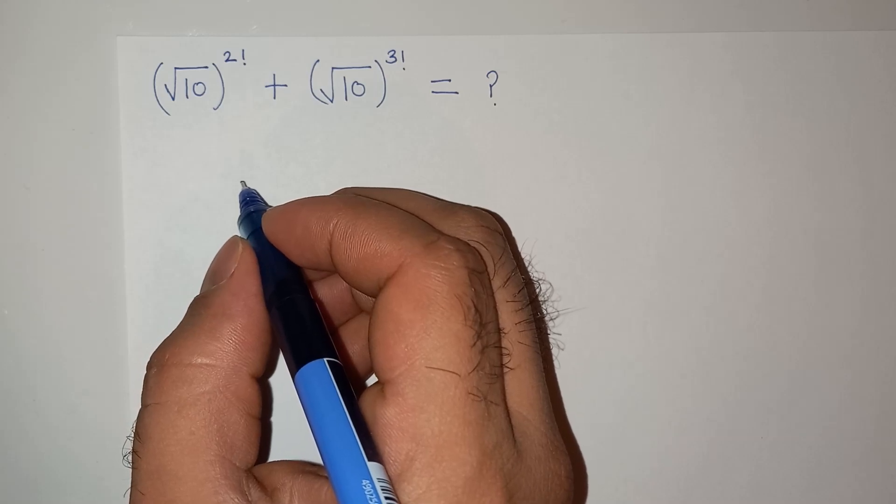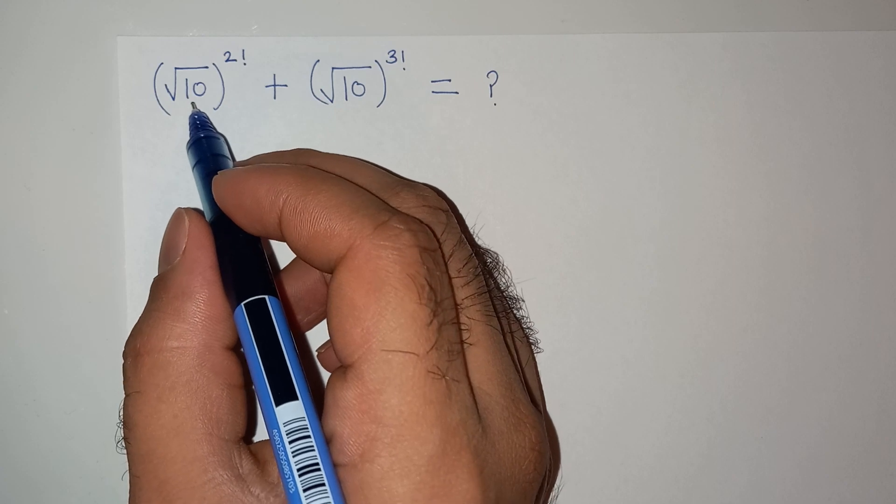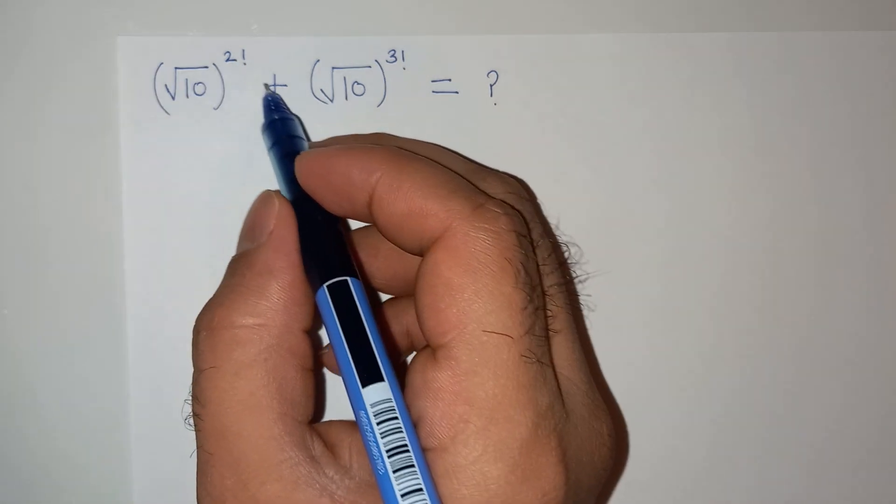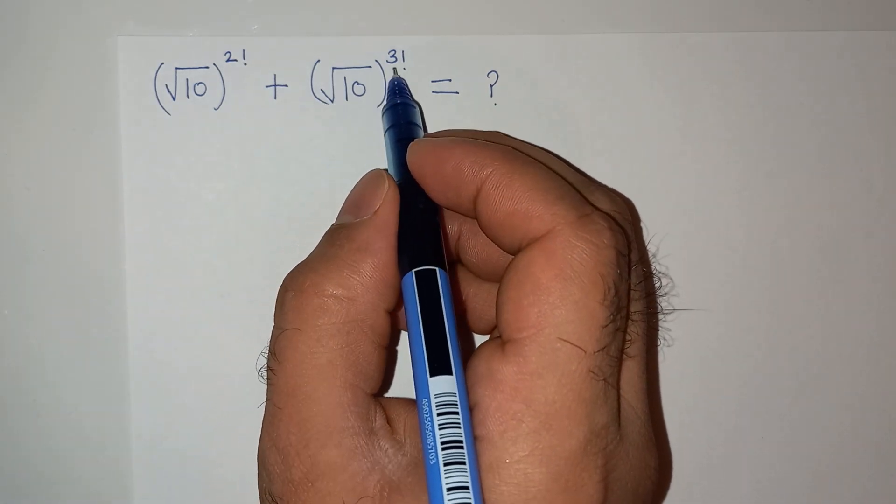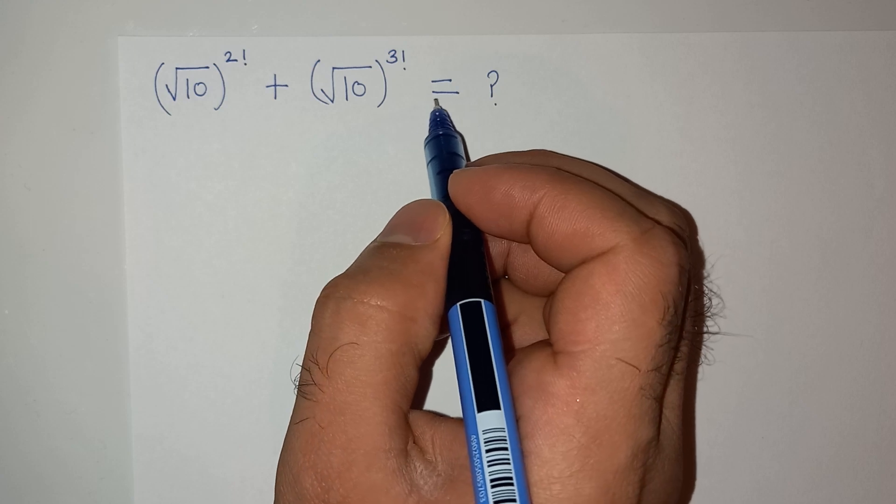Hi guys, welcome back to your channel. Today we are going to solve this interesting question which is square root of 10 to the power 2 factorial plus square root of 10 to the power 3 factorial, and we have to find the value. Let's try to solve this question.